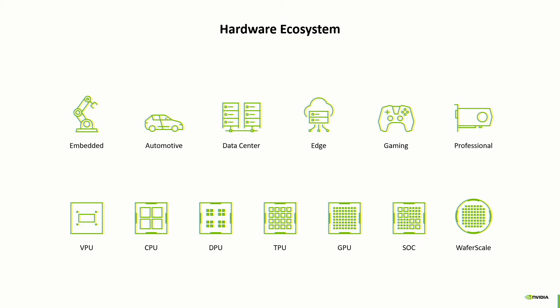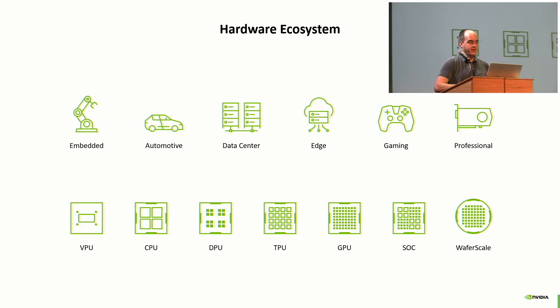The ecosystem includes many different businesses, use cases, companies, and industries — embedded, automotive, data center — all using inference today. With all these different industries, you have many different types of hardware: vision processing units, CPUs, data processing units, tensor processing units, graphics processing units, and SOCs that combine these. We even have wafer scale nowadays. The hardware ecosystem itself is very diverse and fast-moving.